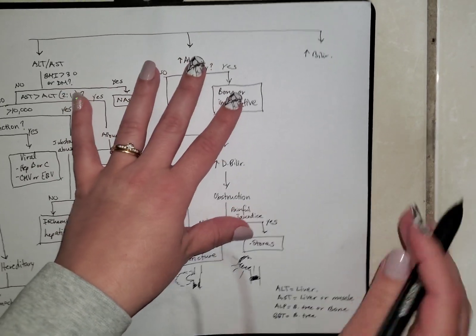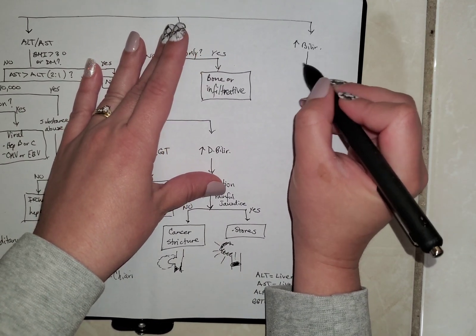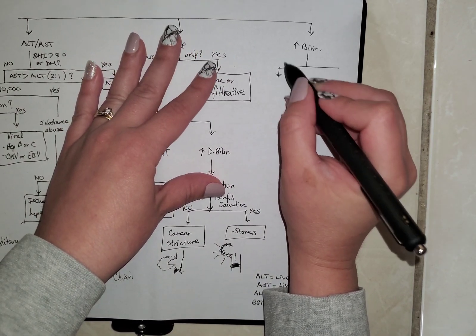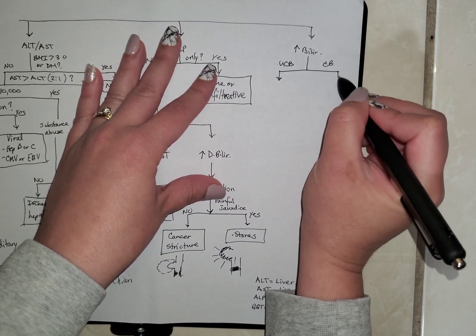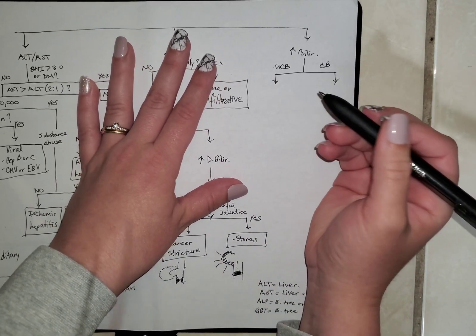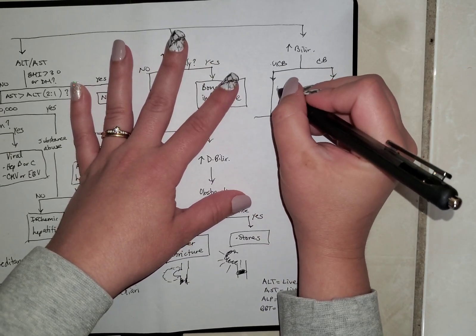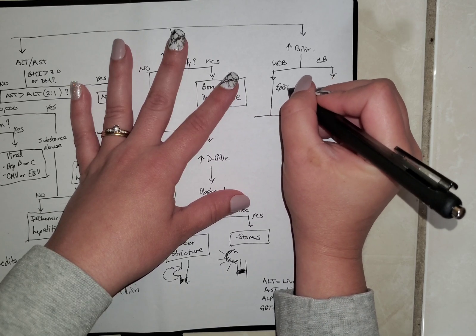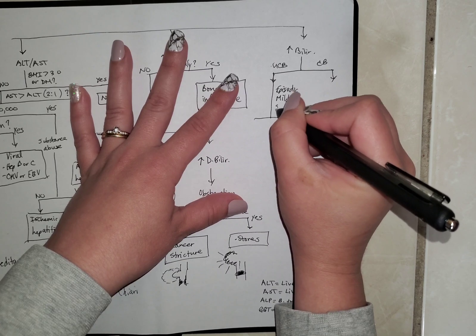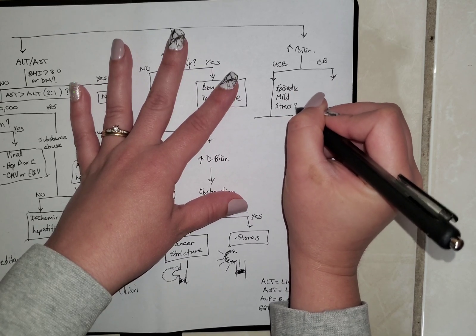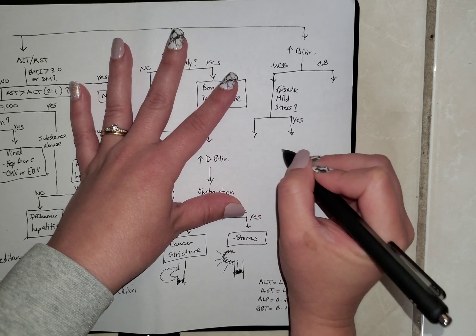Now, lastly, we're going to have increased bilirubin. You're going to have to separate this into either unconjugated bilirubin or is it conjugated bilirubin that's elevated. So if you have unconjugated, you're going to ask yourself, are these episodes episodic, mild, related to stress? If your answer is yes, you've got Gilbert.